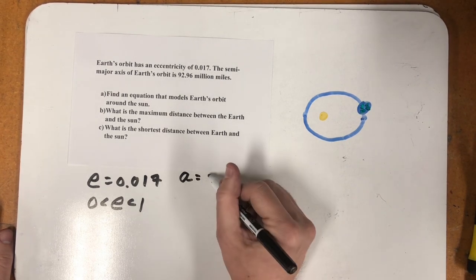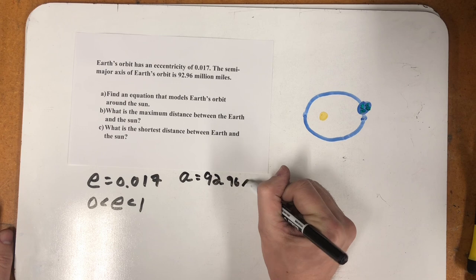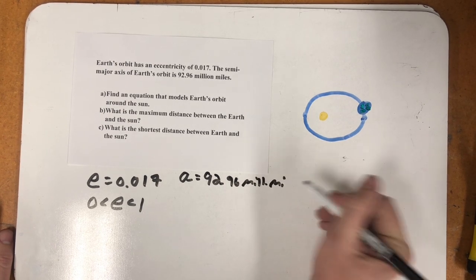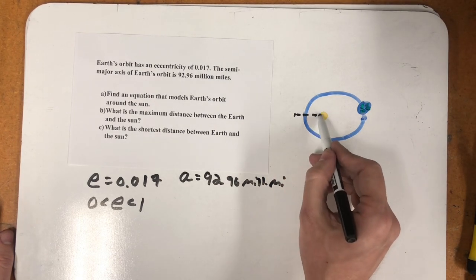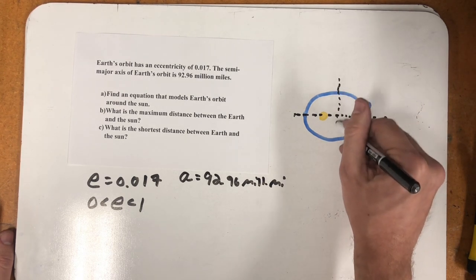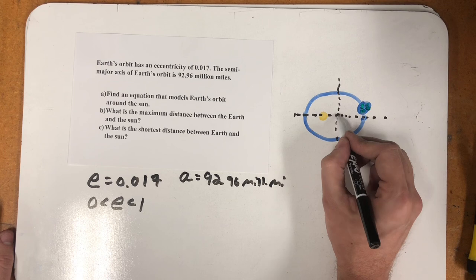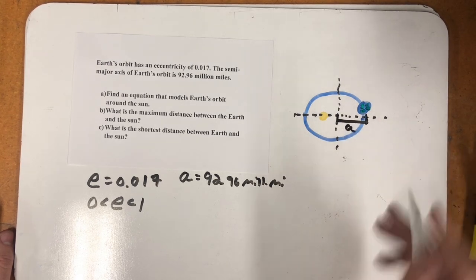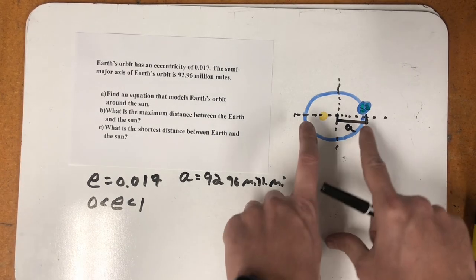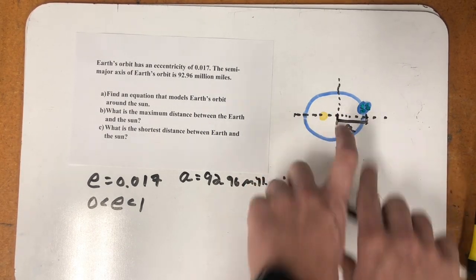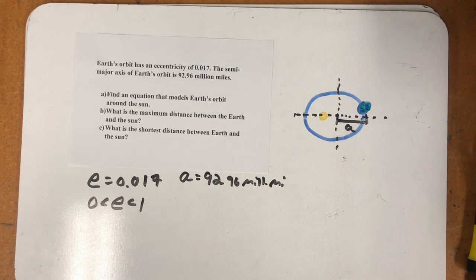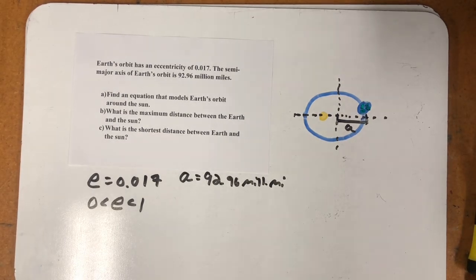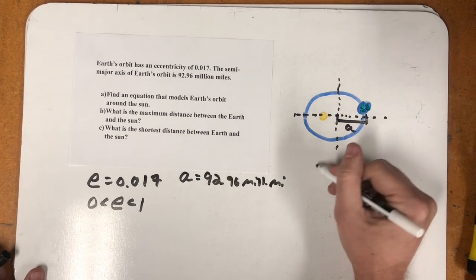The semi-major axis, that is the thing we call A. And now I know that that distance is 92.96 million miles. So if I think about Earth's orbit as having a horizontal major axis, the length from the center to that vertex, that's the value of A. That's the semi-major axis. The major axis would run all the way across. The semi-major axis only runs half the distance. We're asked to find an equation that models the Earth's orbit around the Sun. We're asked to find the maximum distance between the Earth and the Sun and then the shortest distance between the Earth and the Sun.